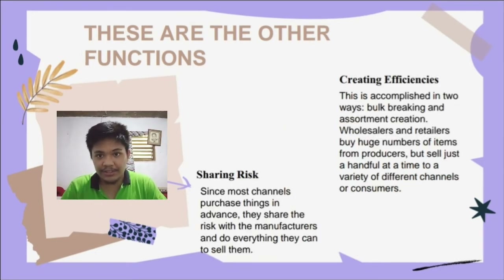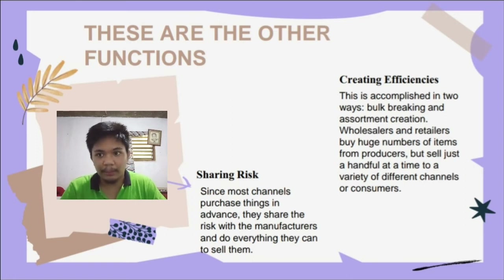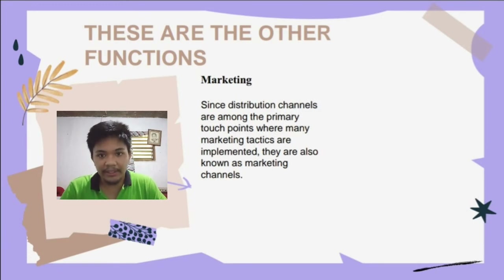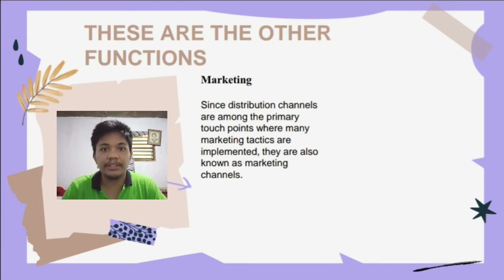Three, creating efficiencies. This is accomplished in two ways: bulk breaking and assortment creation. Wholesalers and retailers buy large numbers of items from producers but sell just a handful at a time to a variety of different channels and consumers. Four, sharing risk — since most channels purchase things in advance, they share the risk with the manufacturers. Five, marketing — since distribution channels are among the primary touch points where many marketing tactics are implemented, they are also known as marketing channels.